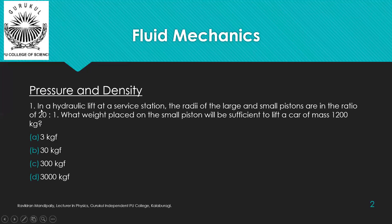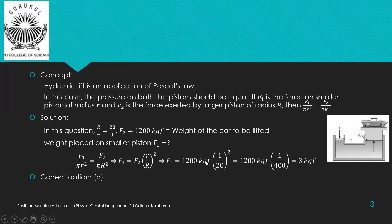Question one: In a hydraulic lift at a survey station, the radii of large and small pistons are in the ratio 20:1. What weight placed on the small piston will be sufficient to lift a car of mass 1200 kg? Options: 3 kg force, 30 kg force, 300 kg force, 3000 kg force.